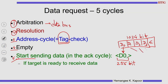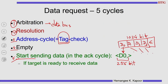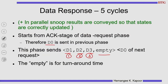The remaining three pieces — D1, D2, D3 — are sent in the data response phase, because the response is only for sending data and the bus is already acquired. So D1 is sent in the first cycle, D2 in the second, D3 in the third, and then there is an empty cycle. The data request phase does not use the data bus — it only uses the tag — while data response uses the data bus. Along with this, the snoop results which were computed will be conveyed on separate snoop lines as part of the response.